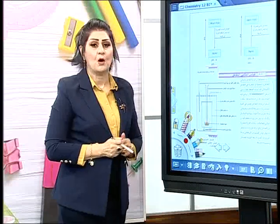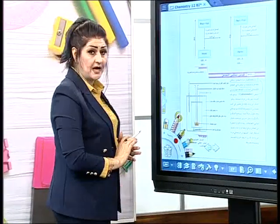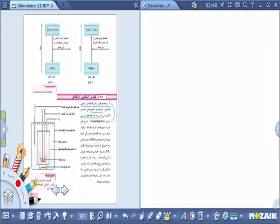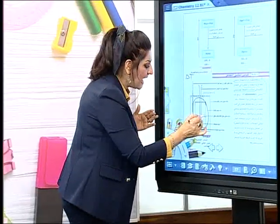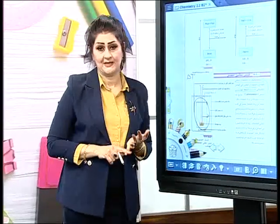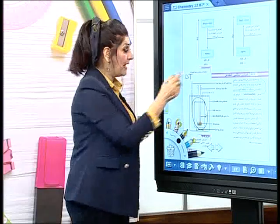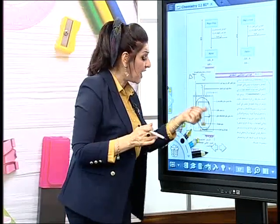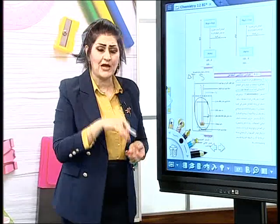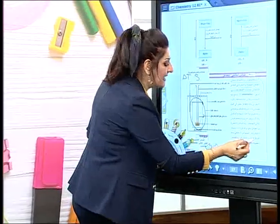عندي محرار - ما الذي يفعله المحرار؟ يقيس التغير في درجة الحرارة. من الذي ستتغير درجة حرارته؟ الماء الموجود حول وعاء التفاعل، لأن الحرارة ستتسرب إذا كانت التفاعل باعثاً للحرارة من الوعاء المغلق إلى الماء. عندي كتلة ماء وعندي التغير في درجة الحرارة وأقدر آخذ السعة الحرارية النوعية للماء من الجداول، فأقدر أقيس كمية الحرارة المتسربة من التفاعل إلى الماء.